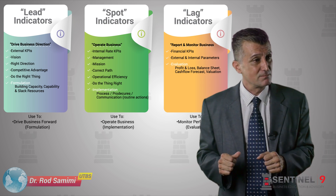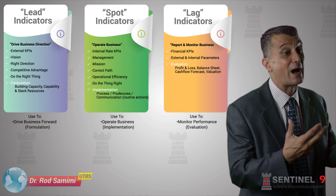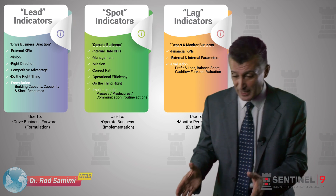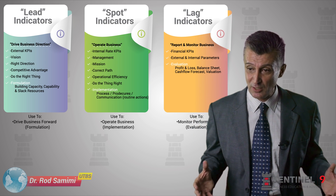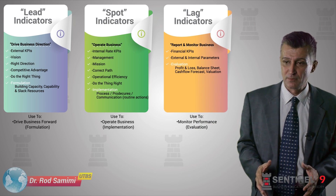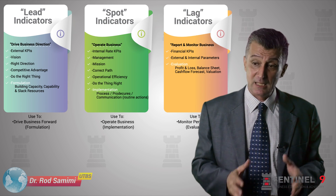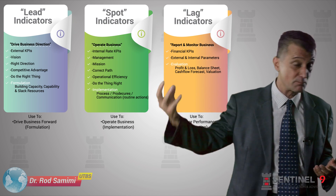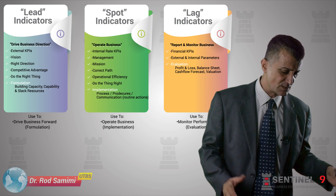One of the biggest problems in running a business — and most of you have either been a victim of it or witnessed it — is when managers, directors, and leaders try to run their businesses by looking only at financial numbers. As the old saying goes, if you torture the figures long enough, surely they will confess. Being preoccupied with numbers is one of the best ways to destroy a business. Financial numbers — lagged indicators — belong in their rightful place: the evaluation part of strategy. Lead indicators tell us where we're going and apply to the formulation part.